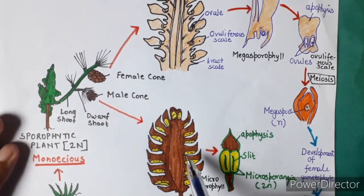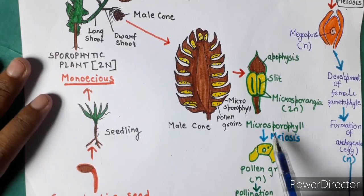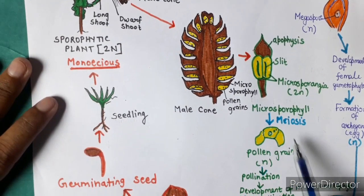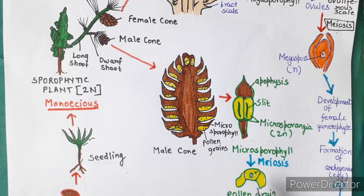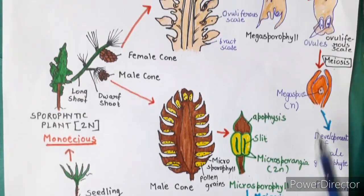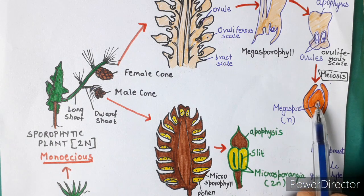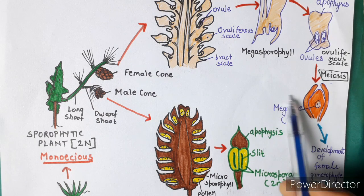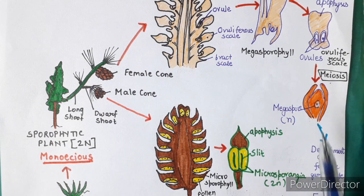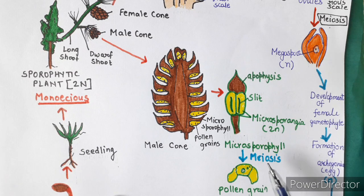In the male cone, the microsporangia cells undergo meiosis to form the haploid pollen grain. This haploid pollen grain marks the beginning of the gametophytic stage — this is why pollen grain is called the first cell of the gametophytic generation. Similarly, in the ovules, meiosis produces the haploid megaspore, which is also the first cell of the female gametophytic generation. With megaspore and pollen grain formation, the haploid gametophytic stage begins.